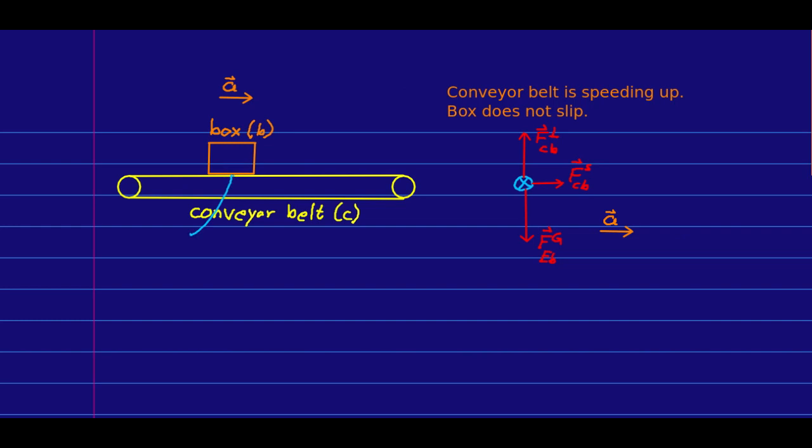And does this force do work? Well, again, the point of application is at the point where the box is touching the conveyor belt. But this time, the point of application is moving along with the box. And so there is a non-zero force displacement vector in the direction of motion. And so that tells us right away that the friction is doing positive work.